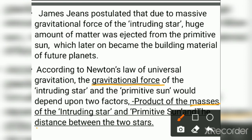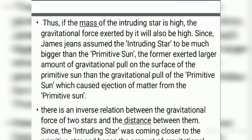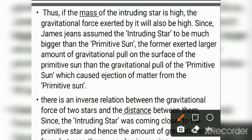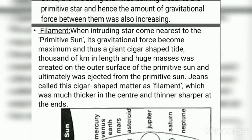If the mass of the intruding star is high, the gravitational force exerted by it will also be high. Since Jeans assumed the intruding star to be much bigger than the primitive Sun, the former exerted a large amount of gravitational pull on the surface of the primitive Sun, causing ejection of matter. There is also an inverse relation between gravitational force and the distance between the stars; as the intruding star came closer, the gravitational force increased.